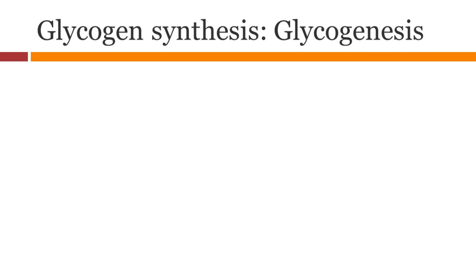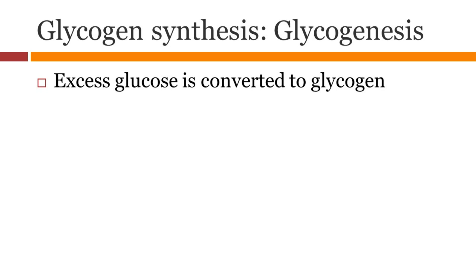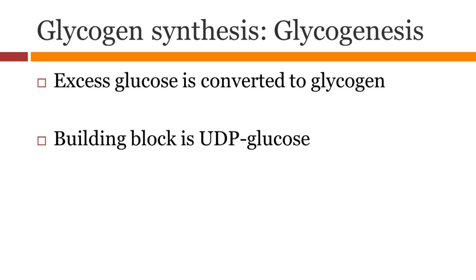Glycogen synthesis, known as glycogenesis, is the conversion of glucose into glycogen. UDP glucose is the building block for glycogen, and it requires energy in the form of UTP.